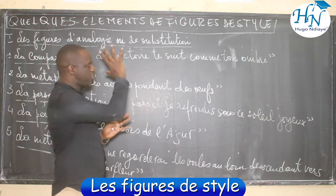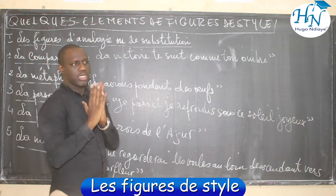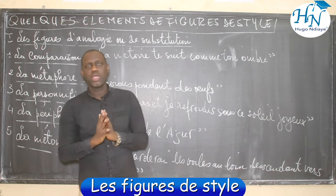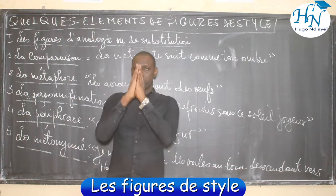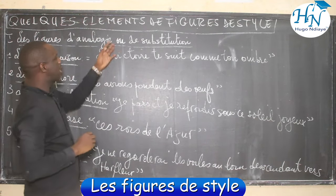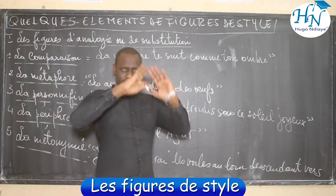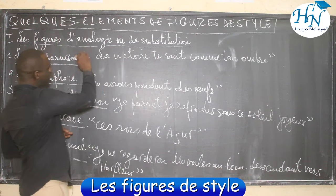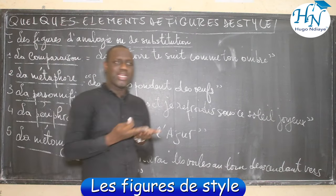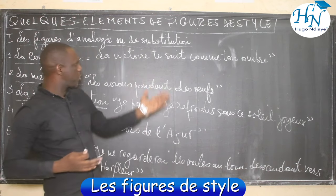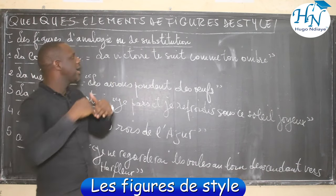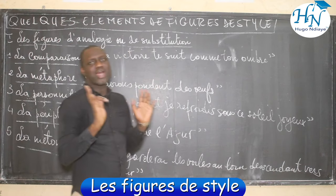Premièrement, les figures d'analogie ou de substitution. Deuxièmement, les figures d'amplification ou d'atténuation. Et troisièmement, nous avons les figures de position. Dans analogie, nous avons le verbe analyser — ce sont les figures qui servent à analyser. Nous avons aussi les figures de substitution : substitution veut simplement dire remplacer, ce sont les figures qui servent à remplacer.